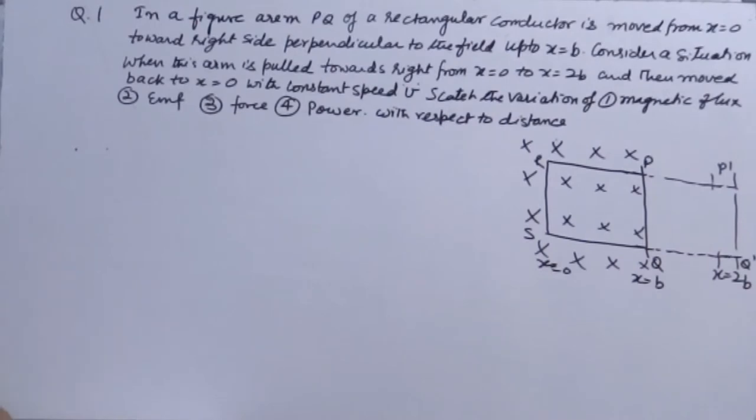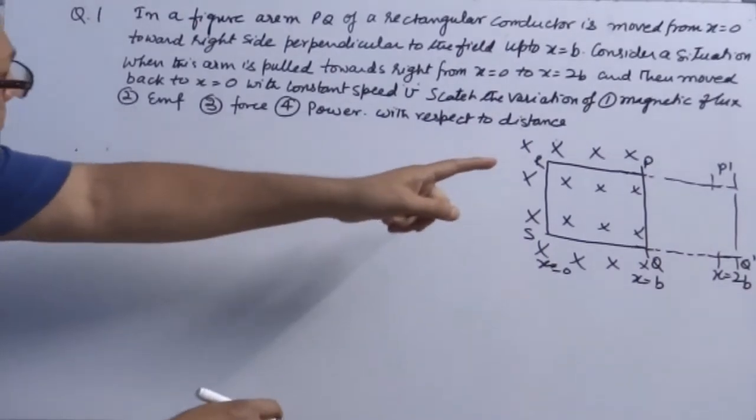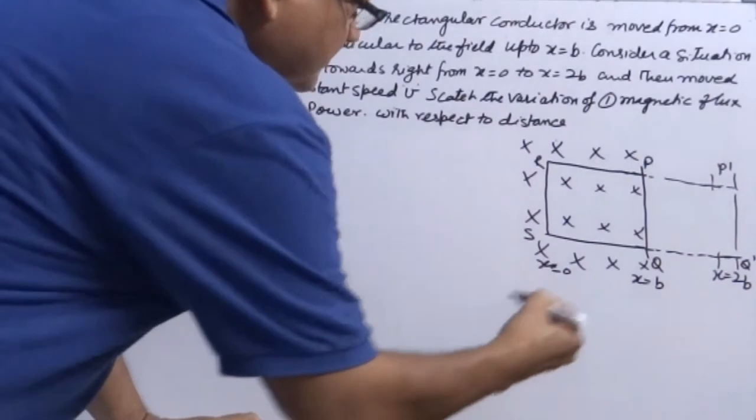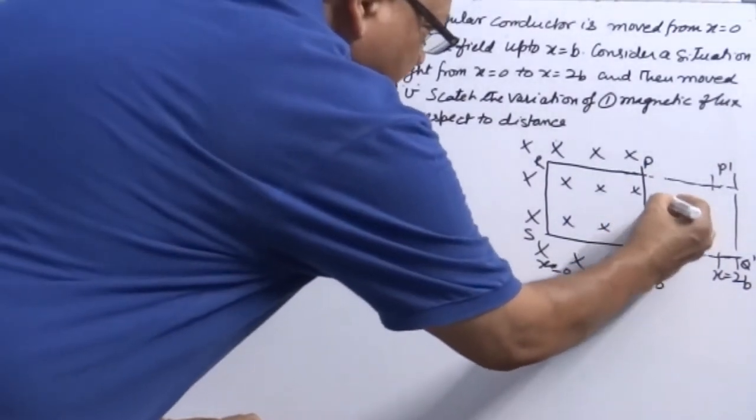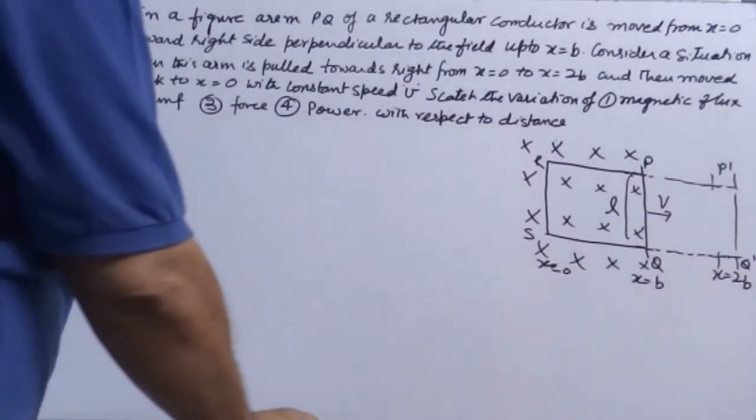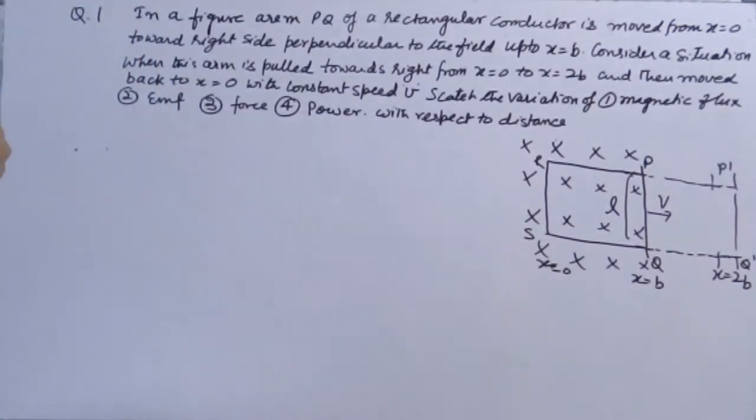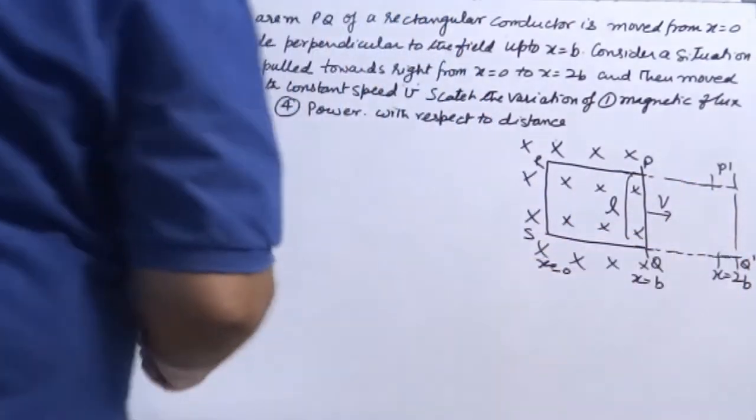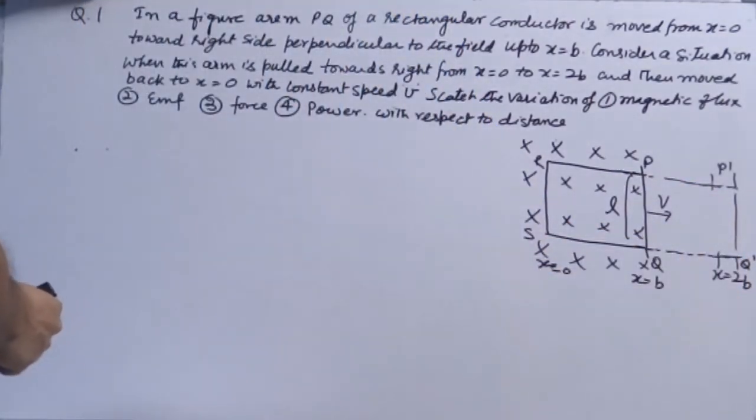This question is very interesting. In a figure, arm PQ of a rectangular conductor moves from X equals 0 towards right hand side with constant velocity V. Length of the arm is L, and we are extending this motion of the conductor from PQ to P'Q' which is X equals 2B.